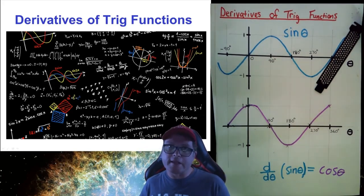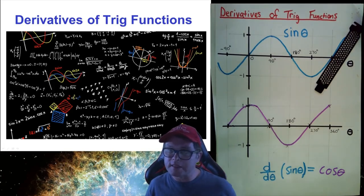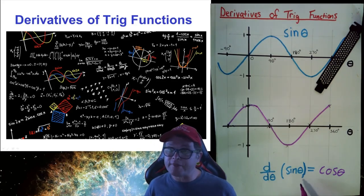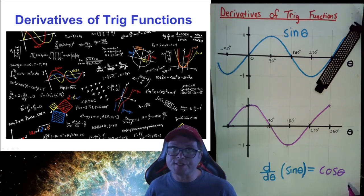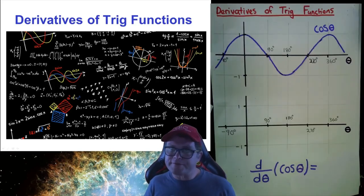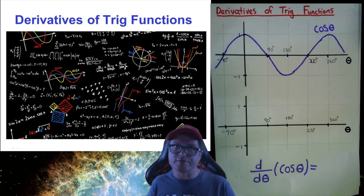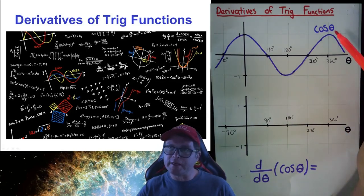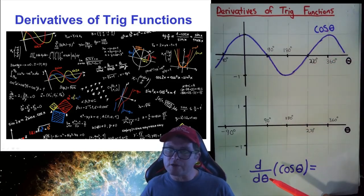This brings us to our first important result: the derivative of sin(θ) with respect to θ is equal to cos(θ). This is something you should remember and always have at your fingertips. The next function we may be interested in differentiating is cos(θ).